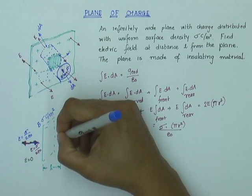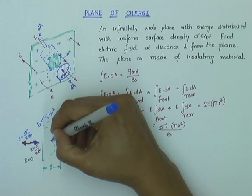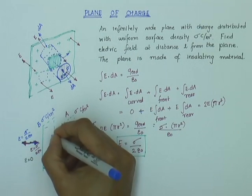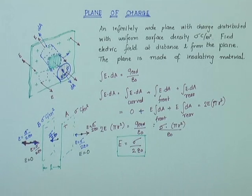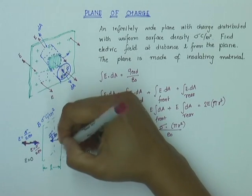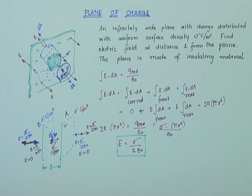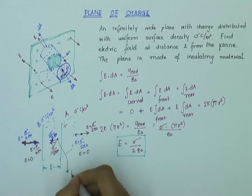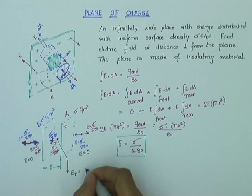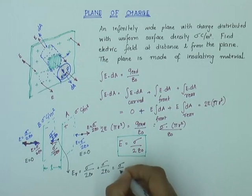Now think about the point in between the two planes. E due to the negative charge acts in a certain direction with magnitude sigma over 2 epsilon zero. E due to the positive charge acts away from the positive charge and is also in the same direction — magnitude sigma over 2 epsilon zero. So the resultant E for a point in between is sigma over 2 epsilon zero plus sigma over 2 epsilon zero, which equals sigma over epsilon zero.